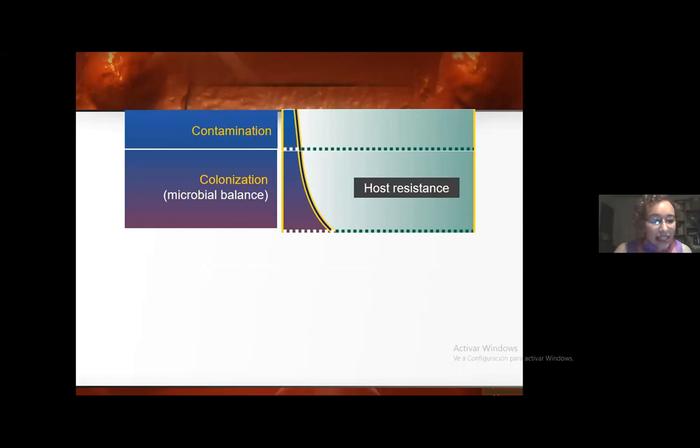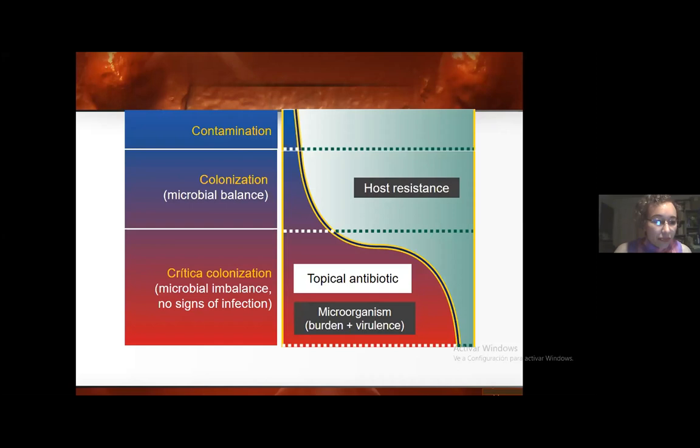Biofilms cannot reach your body as a contamination if the colonization of your microbiota is good — that means it is in eubiosis. You are resistant to infection because there is no place for external microorganisms. But sometimes inner conditions are disturbed, so external pathogen microorganisms can reach your body because the burden is high and powerful enough to attack you.